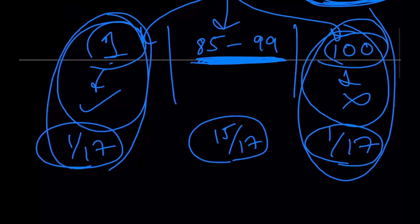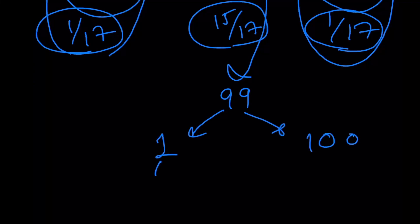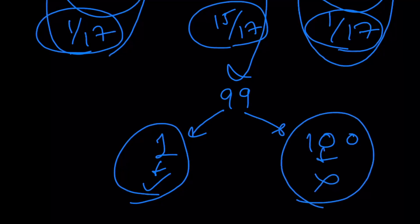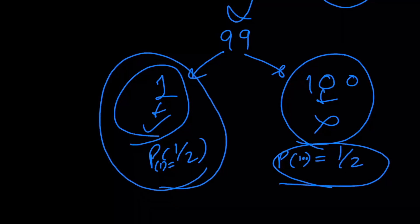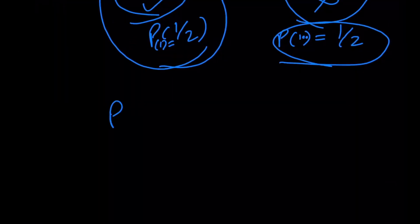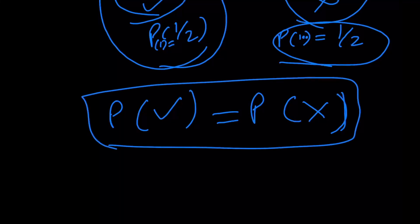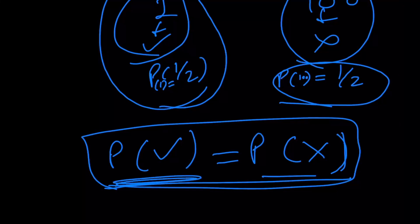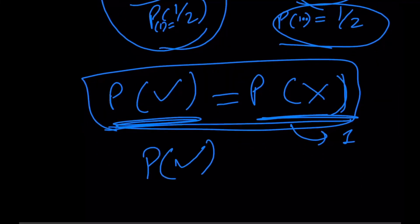Eventually, either someone's going to pick seat 1 or seat 100, and we'll know what's going to happen — or this case keeps going until we come to the 99th person. For the 99th person, you can either pick seat number 100 or 1, and again, 1 leads to success and 100 leads to failure. The probabilities are 1/2 for both cases. So the probability of success and failure are again the exact same. Since both cases must add up to 1, the probability of success is indeed equal to 1/2.